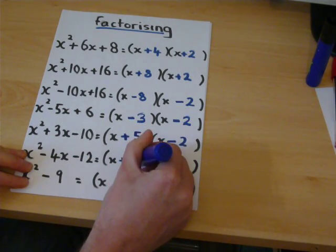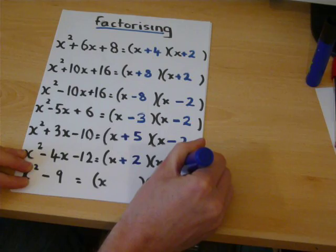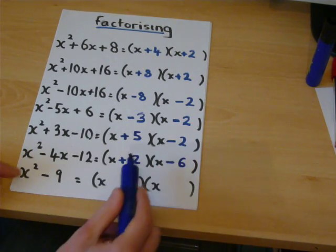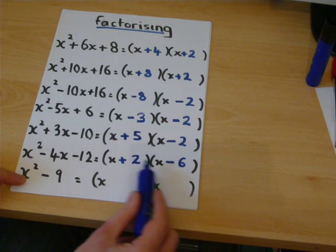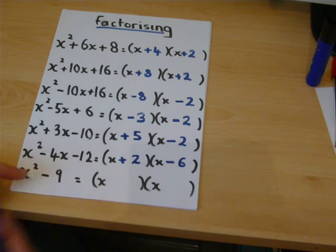So, instead, I put plus two and minus six, because two times minus six is minus twelve, and two take away six is minus four.